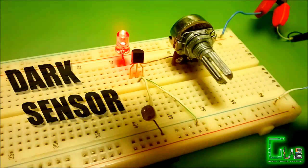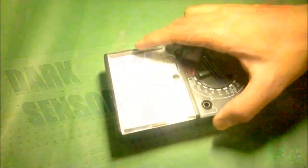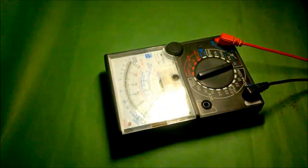Today our project is a dark sensor. In this circuit we are going to use one transistor, one light dependent resistor, aka LDR, a potentiometer, and a LED bulb.